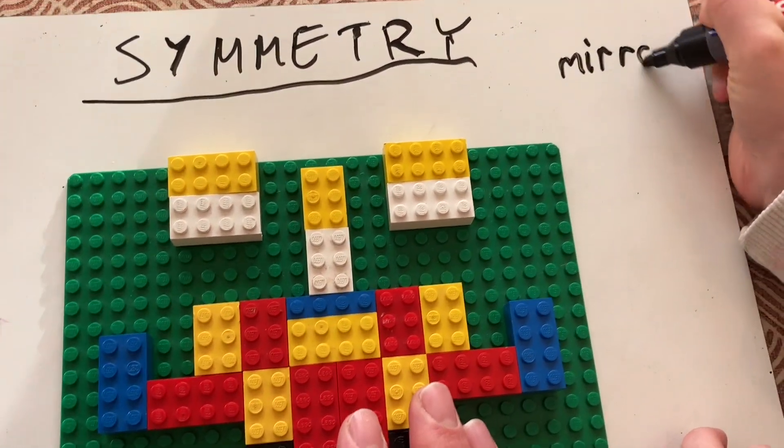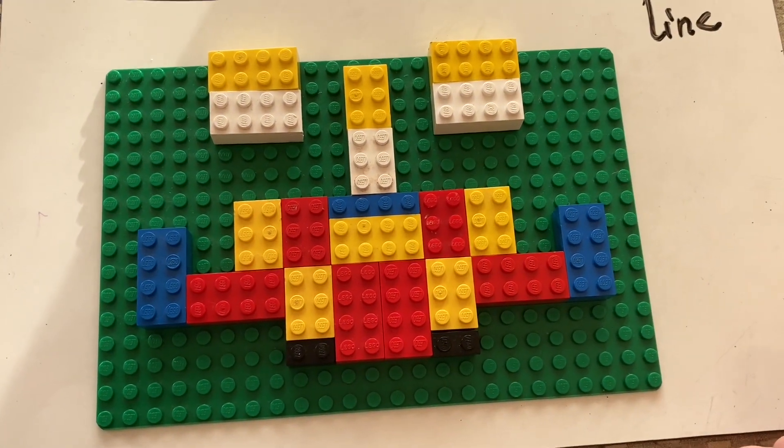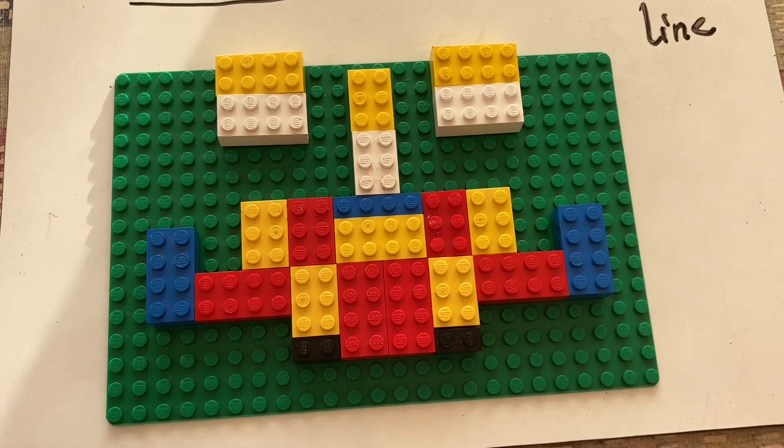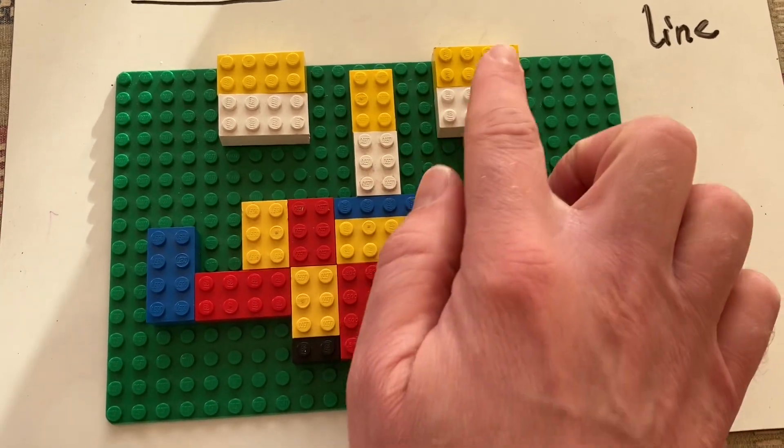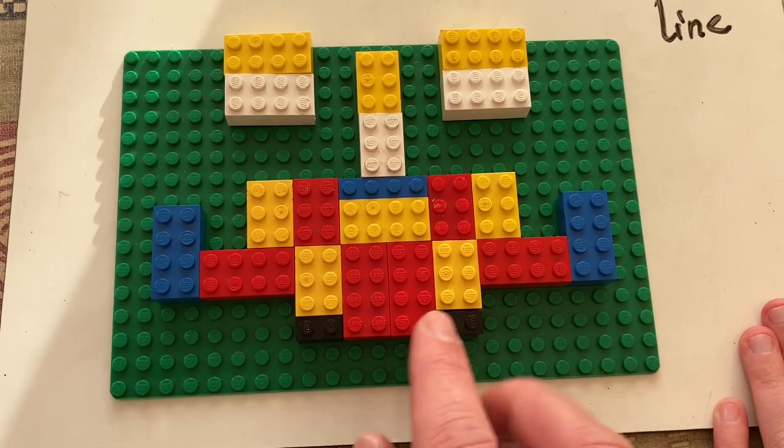A line down the middle, the mirror line. Is the shape here, there's nearly a face, is it symmetrical? Yes, it is because the mirror line is down there. It's got a mirror line down there, so that is reflected, that matches that, that matches that, and they're all the same.